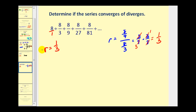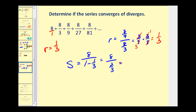Since the absolute value of r is less than one, this will have an infinite sum. It equals the first term, eight, divided by one minus r, one minus one-third. So we have eight divided by two-thirds, which is eight times three-halves, giving us twelve. Therefore this geometric series converges to twelve.